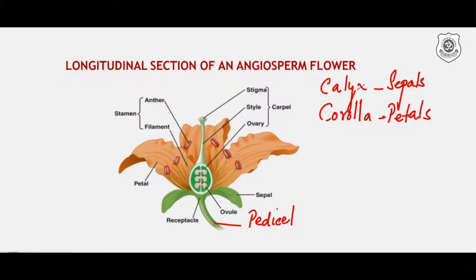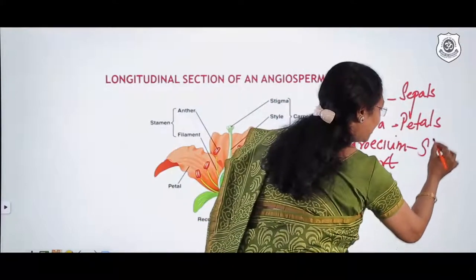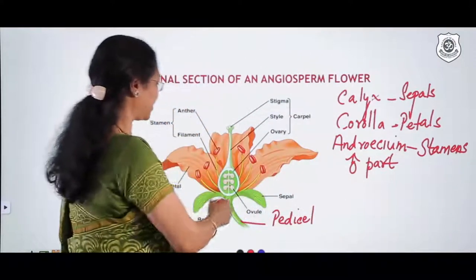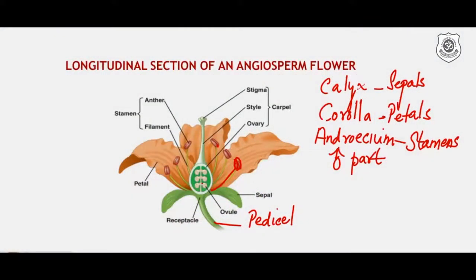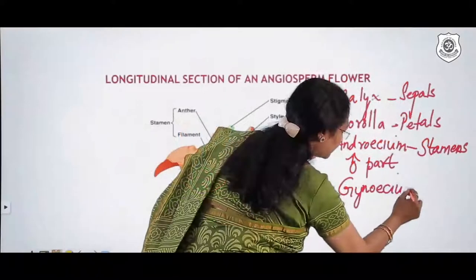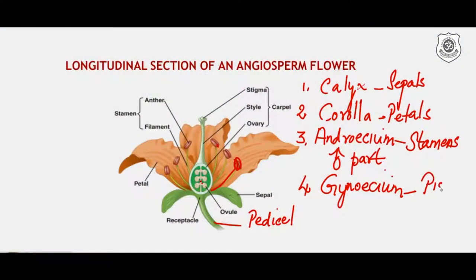Petals are brightly colored to attract agents of pollination. The third whorl is technically called the androecium. Androecium is the male part of the flower and is made up of a large number of stamens. The fourth whorl — the innermost — is technically called the gynoecium, which is made up of either pistil or carpel.